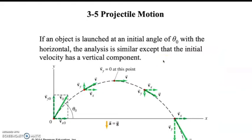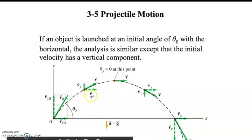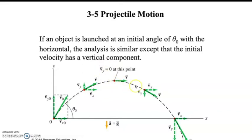When an object is launched at an angle, we're not talking about just a horizontal launch. For an angled launch, we have to take the velocity vector and break it into its x and y components. The initial velocity in x will stay constant because there's no acceleration. The y velocity will decrease until it gets to the top — at the very top, the y velocity will be zero — and then as it comes down, the y velocity will increase again due to gravity.